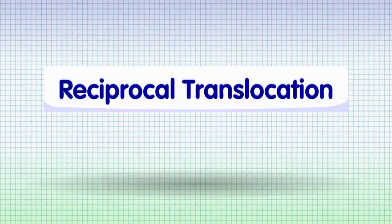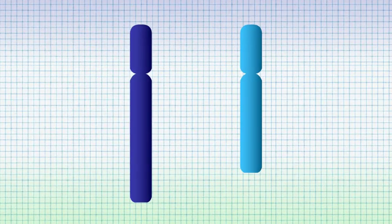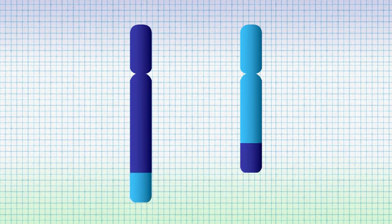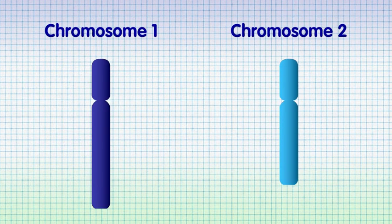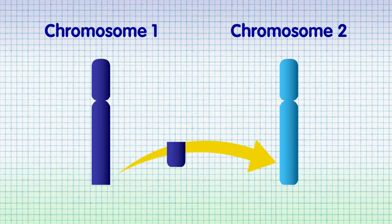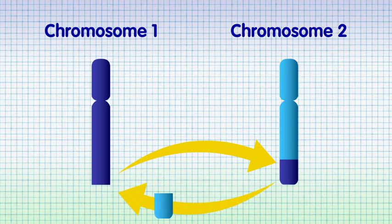A reciprocal translocation occurs when two chromosomes swap a piece of chromosomal material. In this example, a piece of chromosomal material from chromosome 1 has swapped onto chromosome 2, and a piece of chromosome 2 has swapped back onto chromosome 1.